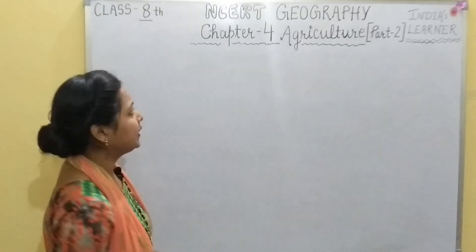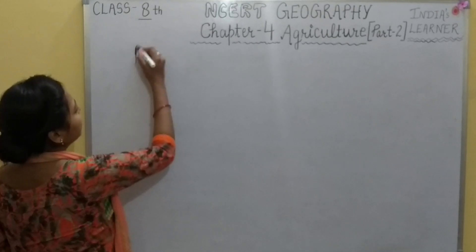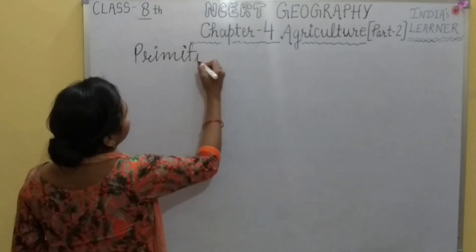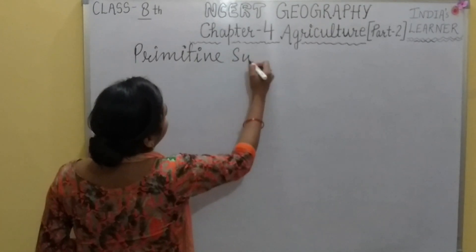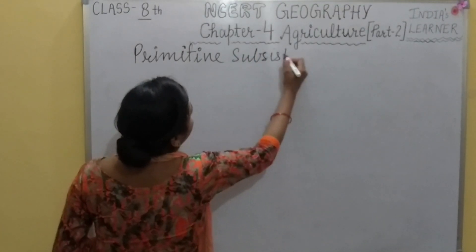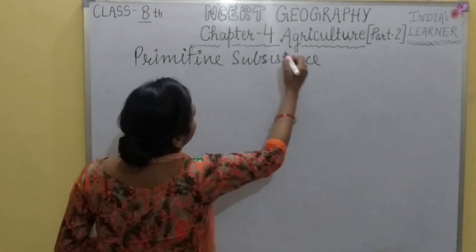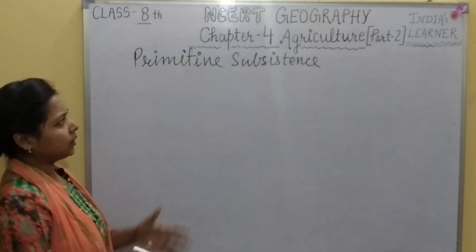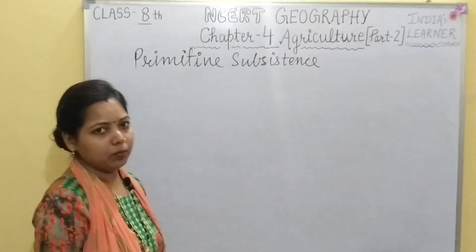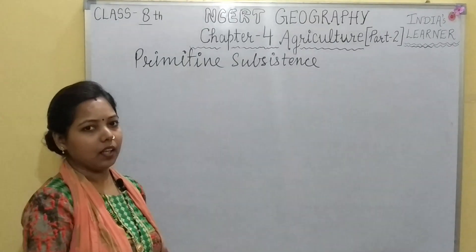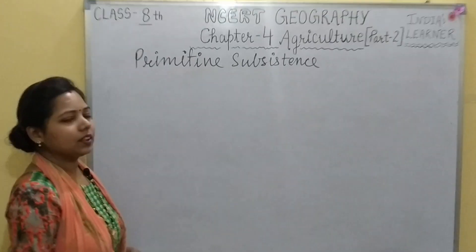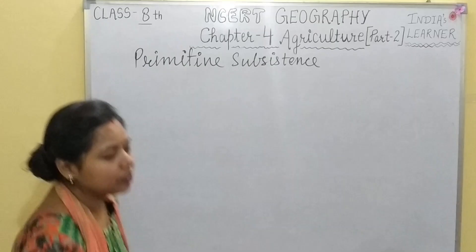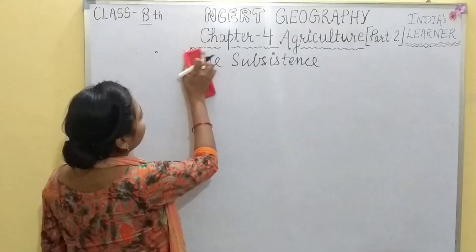Now let us discuss primitive subsistence farming. As discussed in the flow chart, primitive subsistence is practiced in two forms: shifting cultivation and nomadic herding. Let us first discuss shifting cultivation.